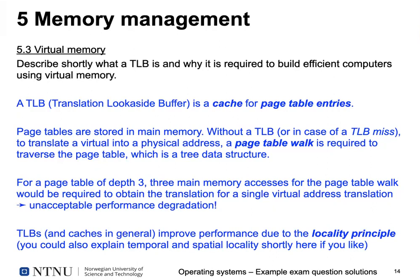This means every virtual memory access requires three additional physical memory accesses just to get the address. The TLB improves this by caching looked-up page table entries. The TLB is relatively small and works because of the locality principle — temporal and spatial locality. For example, a program uses 20% of its memory address range 80% of the time, making those translations much more likely to be in the TLB. A TLB might only hold 64 entries — 64 times 4 kilobyte covers just 256 kilobytes — which isn't much, but locality makes it effective.